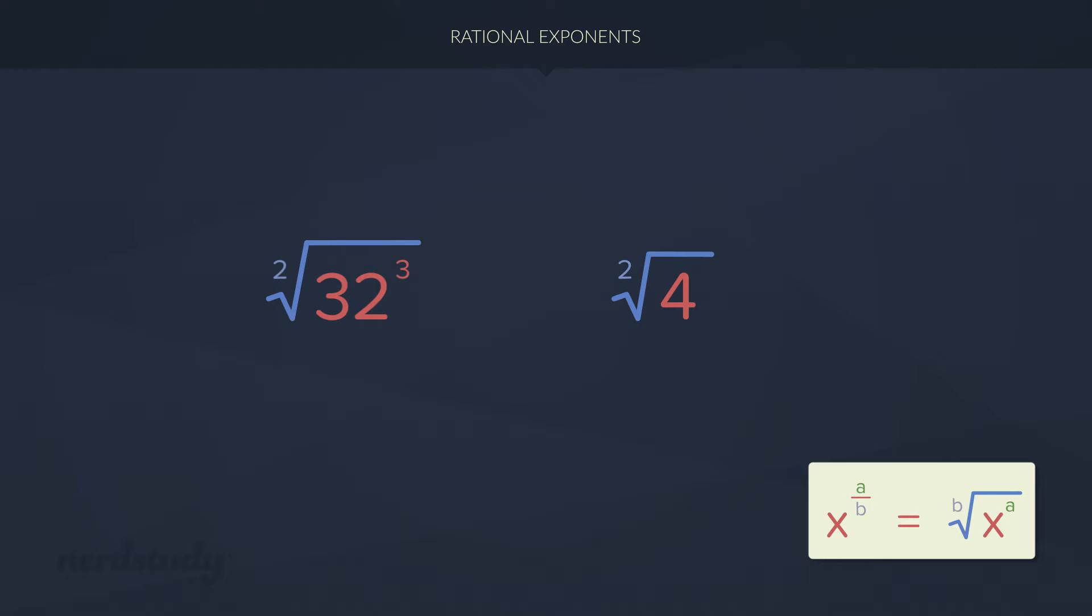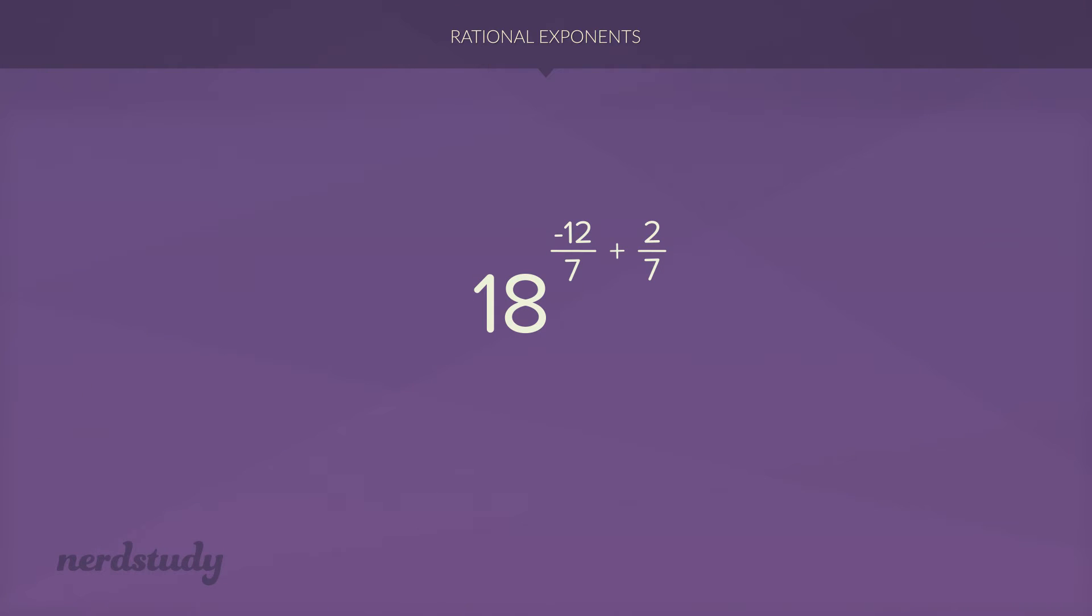Awesome. So let's just do one last question. Let's make this a little bit more difficult. But don't let that fool you. This isn't actually as difficult as it might seem. So we have something like this. We see some fractions in the exponents. Well, first, all we have to do is deal with the operators. Negative 12 over 7 plus 2 over 7. Well, that's pretty simple. That's just going to be negative 10 over 7. Now the question is, what do we do from here?